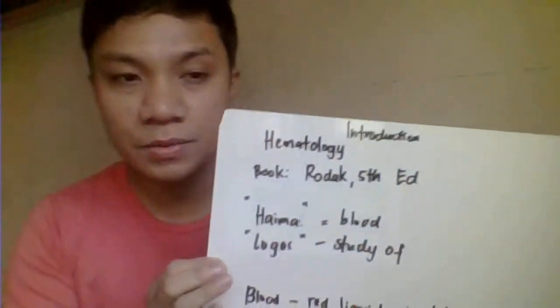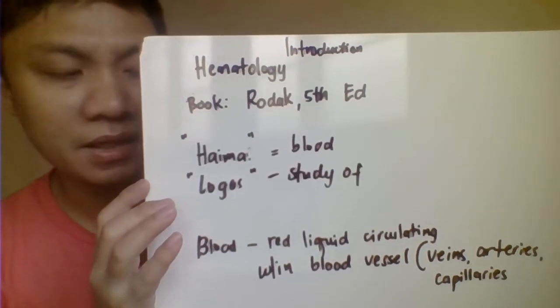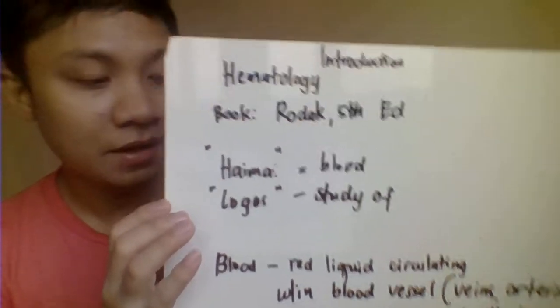We're going to discuss hematology, which is divided primarily into two parts: Hematology 1 and Hematology 2. In Hematology 1, this semester, we'll be discussing RBCs and WBCs. In Hematology 2, next semester, we'll cover platelets and coagulation factors. The textbook we'll be using for both is the Rodak Hematology, fifth edition.